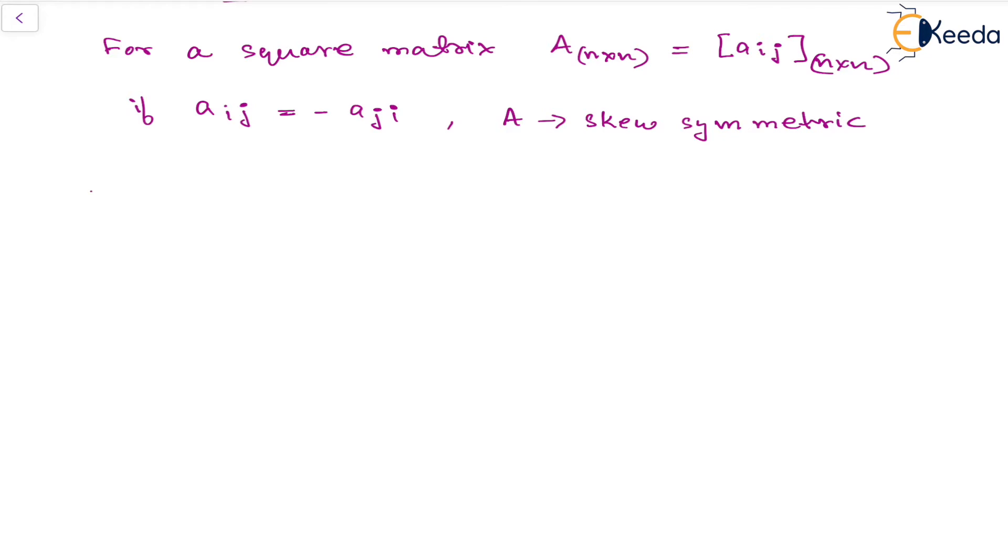For example, there is a reason why we have selected all the diagonal elements to be zero, because we have to put the condition that A11 is equal to minus of A11, and this is possible only when A11 is zero. And this applies for all the diagonal elements.